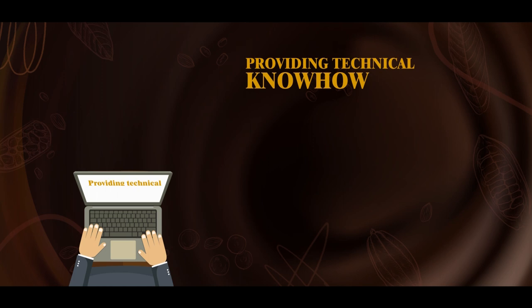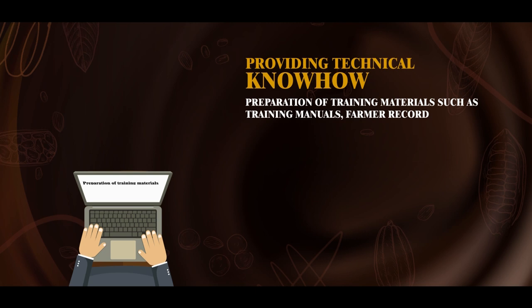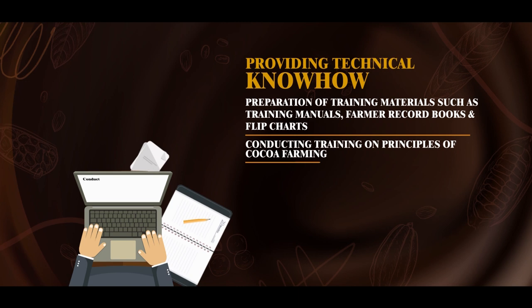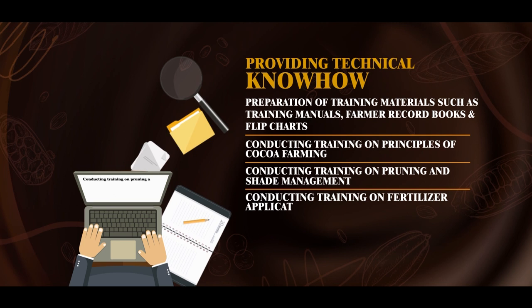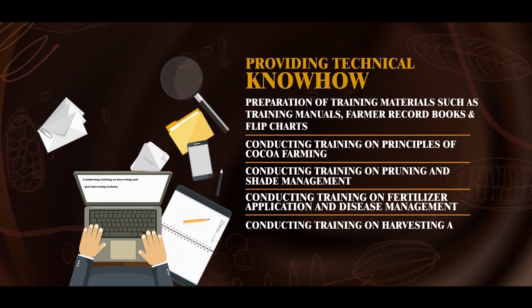In providing technical know-how for producers, the following were done: preparation of training materials such as training manuals, farmer record books, and flip charts; conducting training on principles of cocoa farming; conducting training on pruning and shade management; conducting training on fertilizer application and disease management; conducting training on harvesting and post-harvesting techniques; and conducting training on climate resilient land management practices.